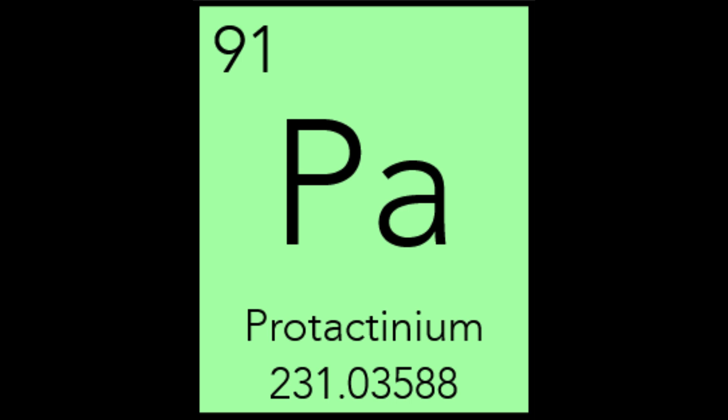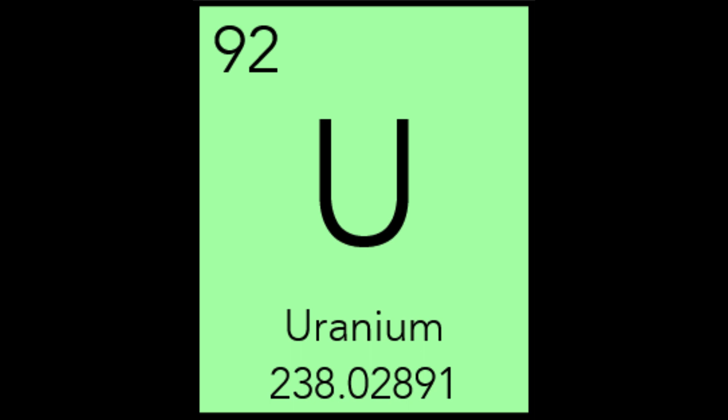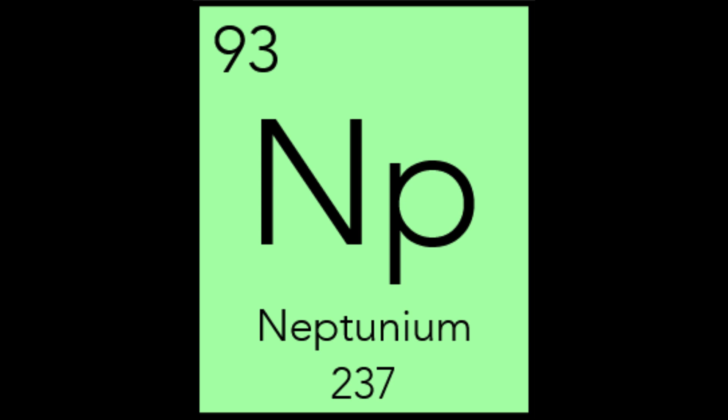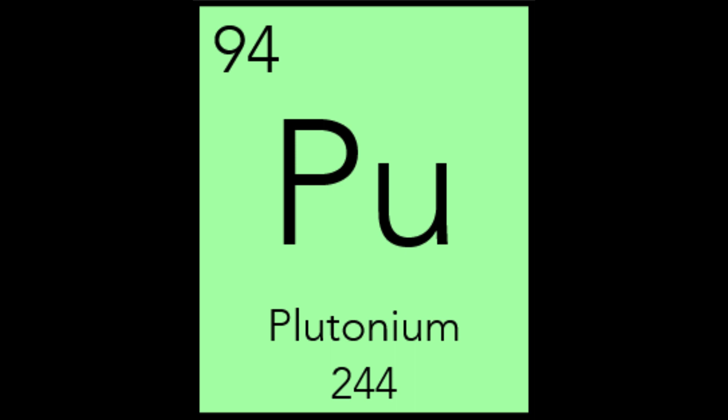Uranium, U, is named after the planet Uranus, which had been discovered eight years earlier in 1781. The planet itself was named after Uranus, the god of sky and heaven in Greek mythology. Uranium is used in nuclear power plants and nuclear weapons, and is also used to make plutonium. The elements after uranium are called transuranic elements — they are all unstable and decay radioactively into other elements. Neptunium, Np, gets its name from the planet Neptune — the name was chosen specifically because it was the next element after uranium, just as Neptune was directly after Uranus. Neptune the planet was named after the Roman god of the oceans. Plutonium, Pu, was named after Pluto the dwarf planet, because it was discovered directly after neptunium and follows uranium in the periodic table — by analogy with the order of the planets. The dwarf planet itself was named after Pluto, the god of the dead in classical mythology.